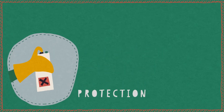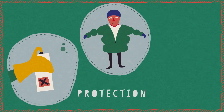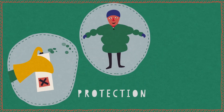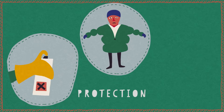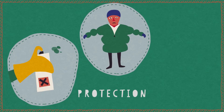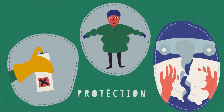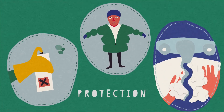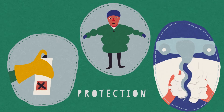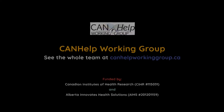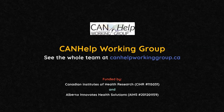There are things we can do to protect ourselves from the different causes of disease, like wearing gloves when working with harmful chemicals, and wearing appropriate clothing to protect our body. Handwashing is another simple way to protect ourselves from a common cause of disease.